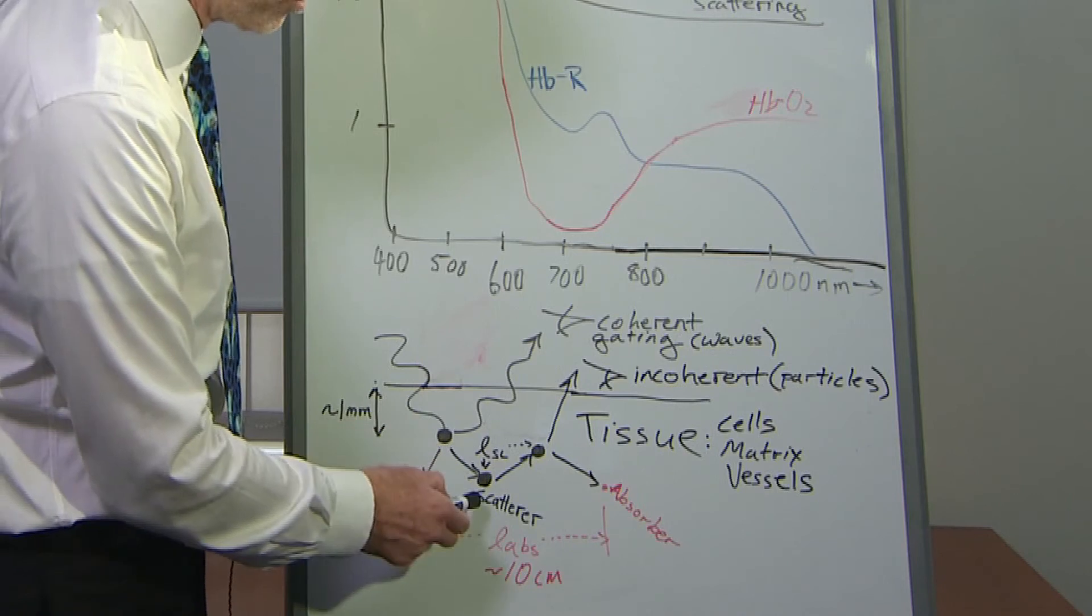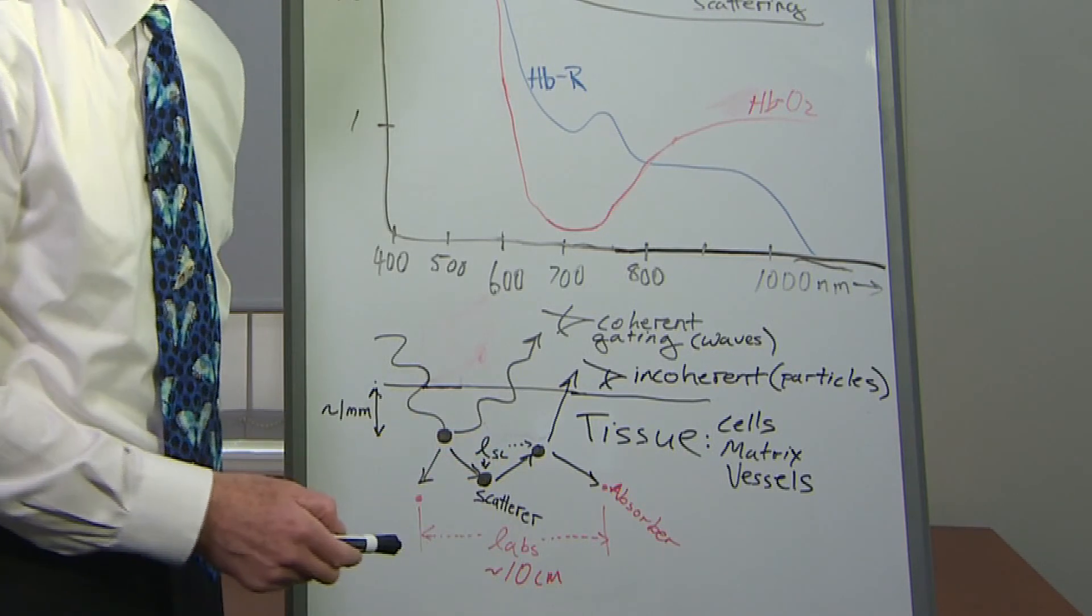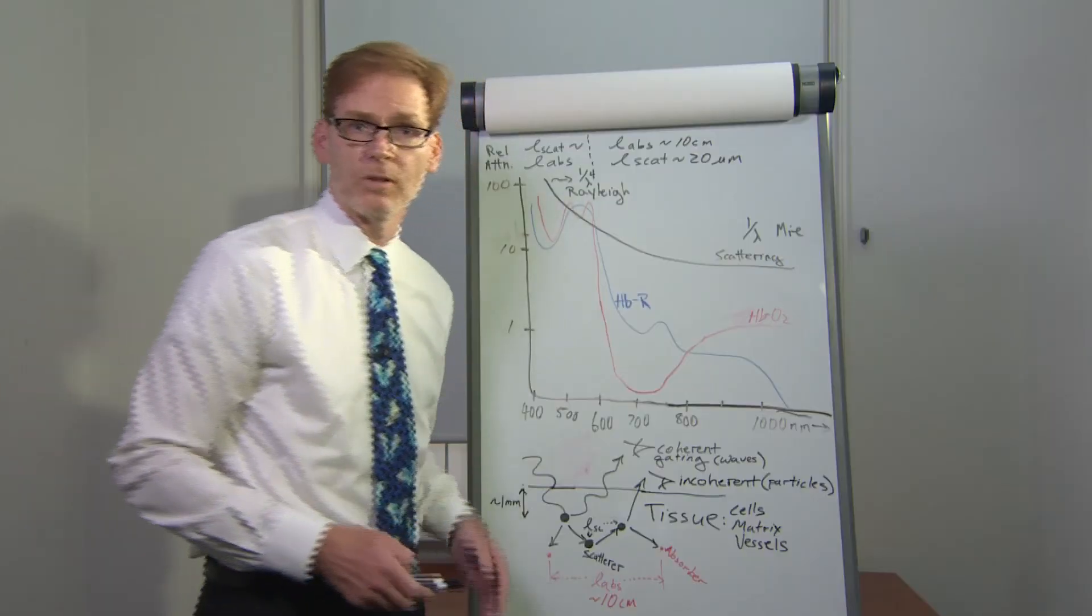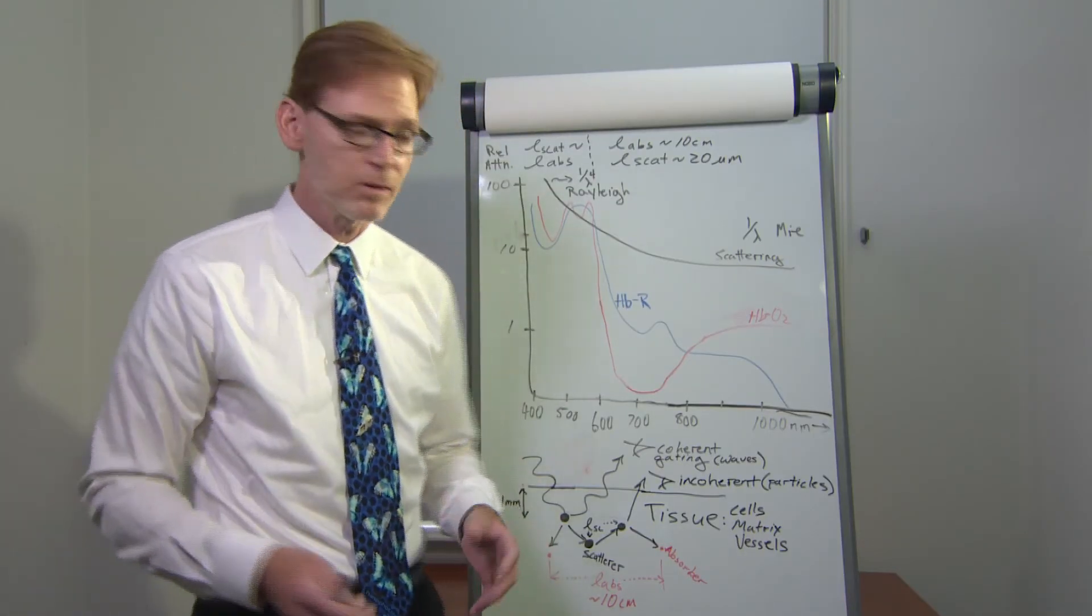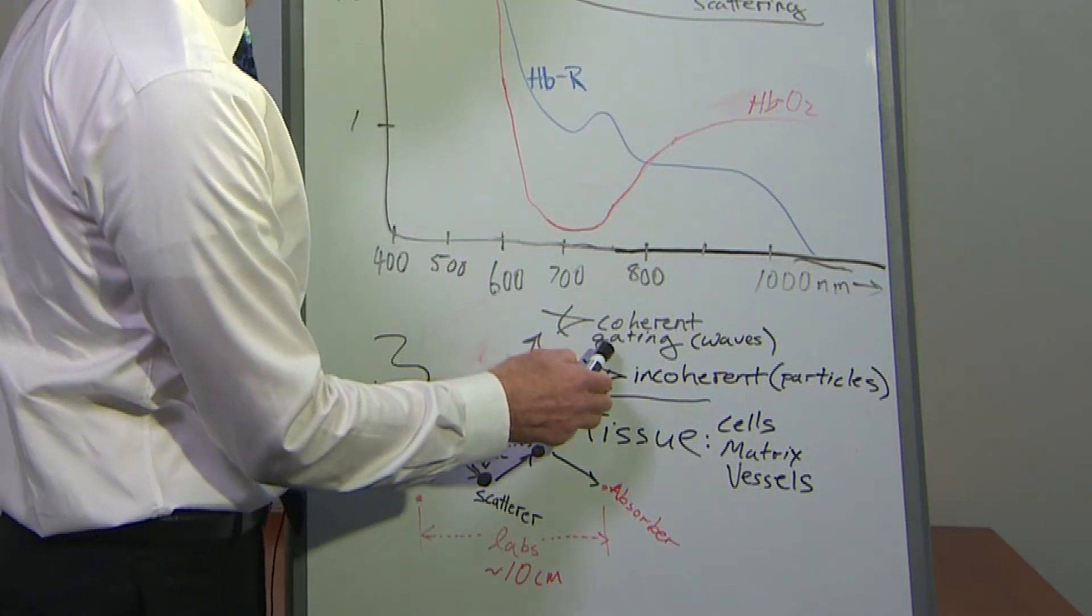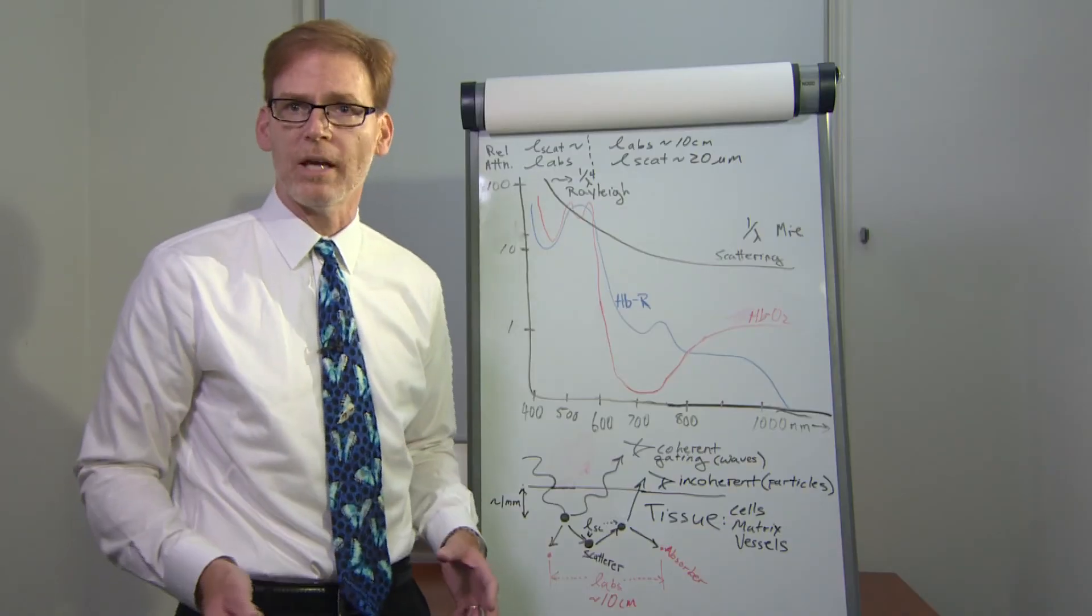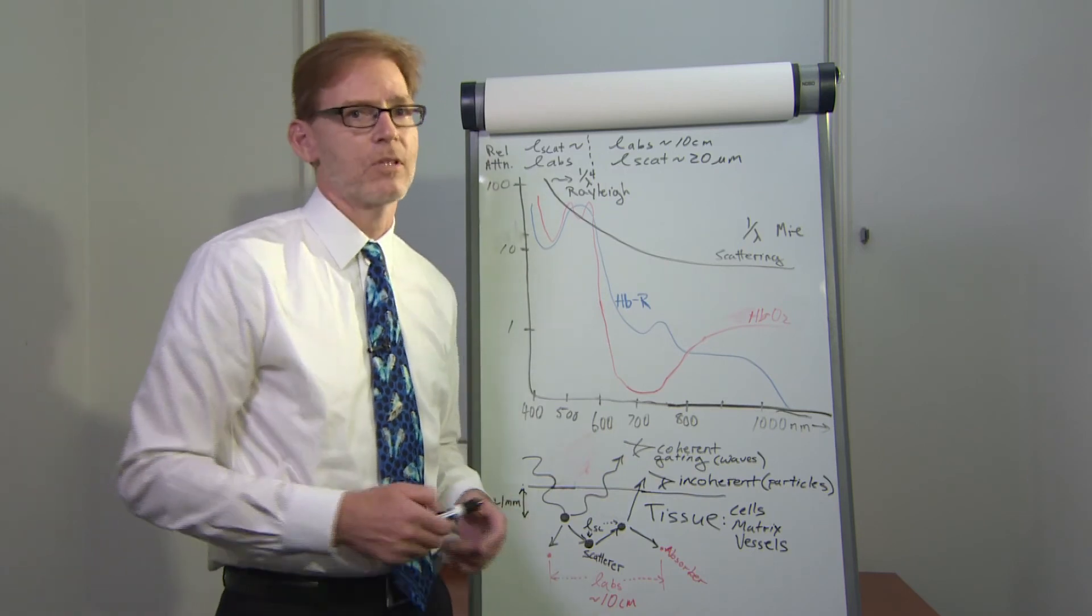We can go deeper in tissue by looking at multiply scattered photons, and here we treat photons as particles. We'll typically use a transport equation-derived model to measure the intensity or temporal spatial fluctuations of incoherent light, and capture deeper tissue structures.